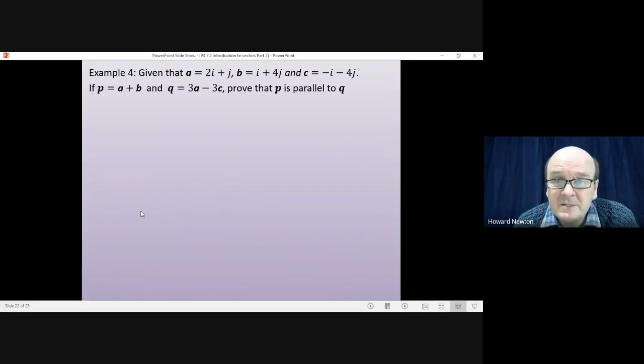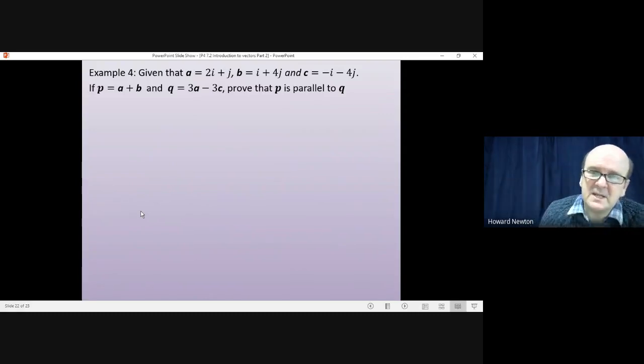Okay, example 4 is slightly different. We're given three vectors a, b and c in ij notation. First of all we're asked to work out the vector p which is a plus b. And then we're asked to work out the vector q which is 3a minus 3c. And then we're asked to prove that the vector p is parallel to the vector q. So p and q have to go in the same direction. But they don't have to have the same magnitude. What that means is that p needs to be a multiple of q. So maybe p is 2 times q or 5 times q or 10 times q. And that would mean they do go in the same direction. But they have a different size from each other. So that's what you're going to do. Work out the vector p. Work out the vector q. And then show that one is a multiple of the other. And that'll mean that they're parallel. Okay, I'll let you have a go at doing all of that. Pause the video. Come back to me when you're ready.